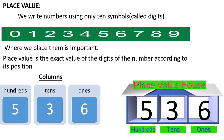First, let me tell you what we mean by the place value of a digit. Students, we write numbers using only 10 symbols called digits. These are digits: 0, 1, 2, 3, 4, 5, 6, 7, 8, 9.